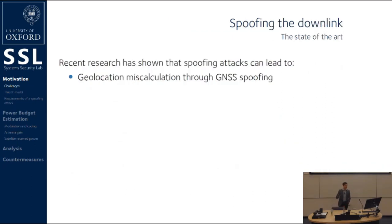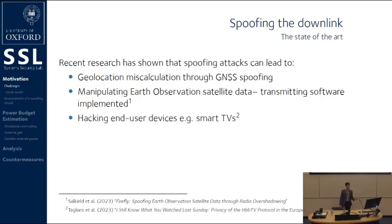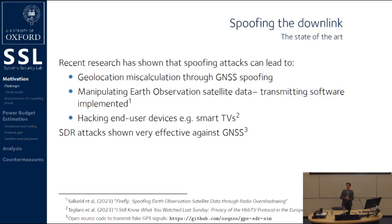In order to spoof the downlink, we can take a look at existing state-of-the-art research. GNSS spoofing is currently the most prevalent area of research, and there's a great paper by Nils that looks into the requirements specifically for this kind of system. There are other recent papers showing that if you're able to spoof the downlink, you can cause all sorts of downstream effects on satellite processing pipelines, such as manipulating Earth observation data or hacking end-use devices. To achieve this against systems like GNSS, software-defined radios have been shown to be very effective — you can simply take the output from your SDR, put it into an amplifier, send it out, and spoof any antennas within the area. However, these attacks don't really generalize to all satellite data links, especially ones operating at very high frequencies, very high received powers, or with dedicated ground station dishes.